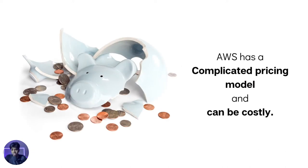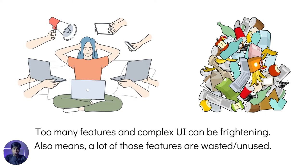Now where does AWS lack? AWS has a very complicated pricing model and it can get costly unless you're managing your resources properly — and this applies to individual developers, startups, or even large enterprises. The other thing that is troublesome with AWS is that with so many services available, the sheer number of features can get slightly intimidating and the UI can be slightly complex to deal with. And if you're trying to build something very dedicated, or a startup in a particular domain, you might not be using all the features available inside AWS, so you end up focusing on a particular set of features while the rest go to waste.